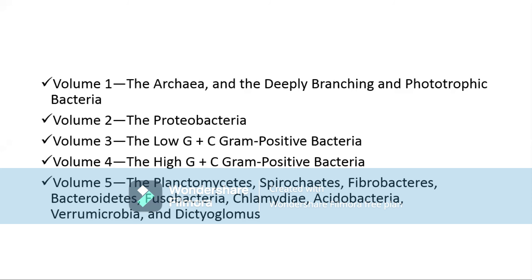Volume 2 is named Proteobacteria and is also gram negative in nature. Volumes 3 and 4 both comprise gram positive bacteria, but the difference is that Volume 3 contains gram positive bacteria with low G+C content, while Volume 4 contains gram positive bacteria with high G+C content. Volume 5 contains those gram negative organisms that were not grouped in Volumes 1 and 2, making the diversity of Volume 5 much more comprehensive.